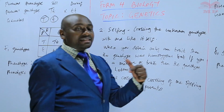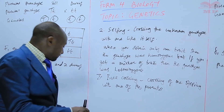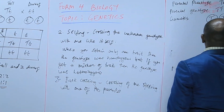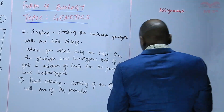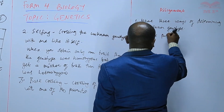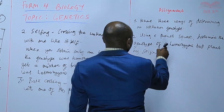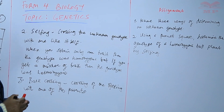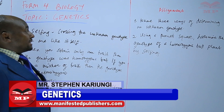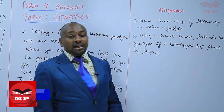We basically refer to them collectively as test crossing — we are testing to find out what the genotype is. For the assignment: question one, name three ways of determining an unknown genotype. Question two, using a Punnett square, determine the genotype of a heterozygous tall plant by selfing. Until next time, goodbye.